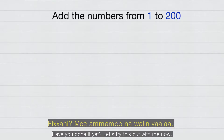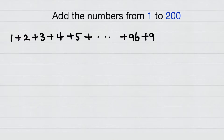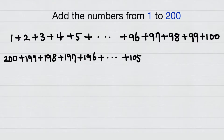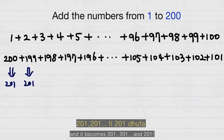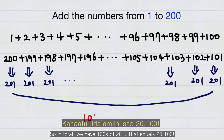Have you done it yet? Let's try this together. I'm going to write half of the numbers on top and the rest on the bottom. Each pair adds up to 201 — 201, 201, and so on, all the way through. So in total, we have one hundred pairs of 201, which equals 20,100.